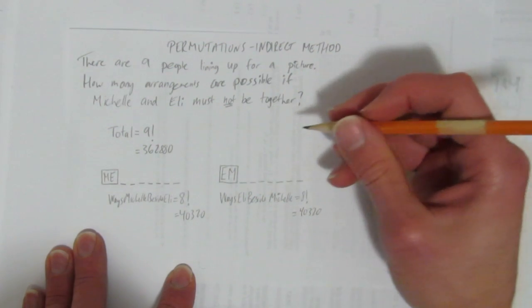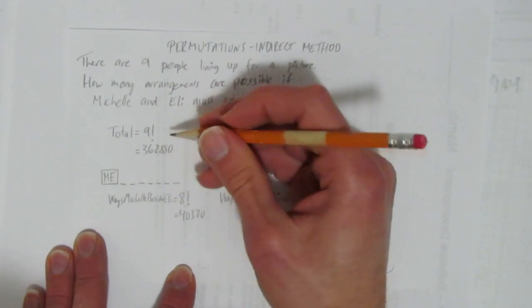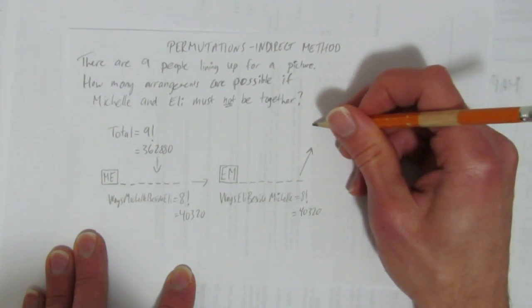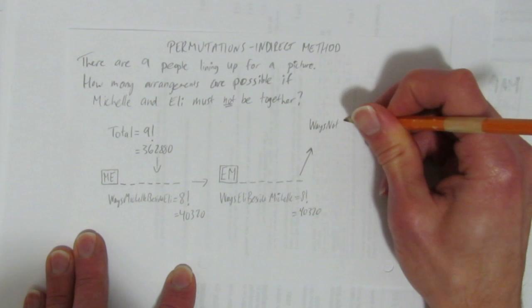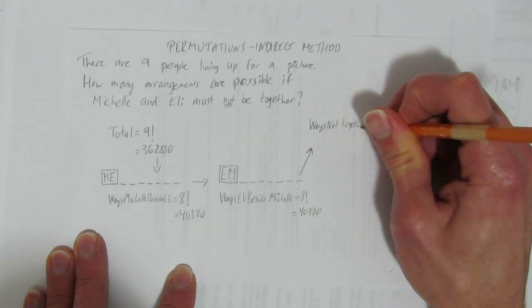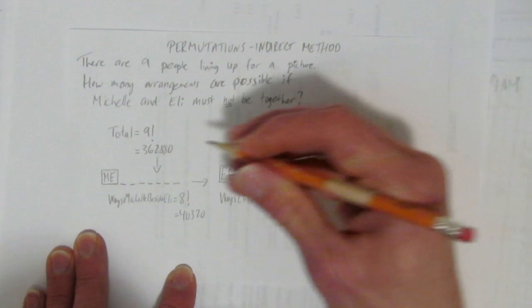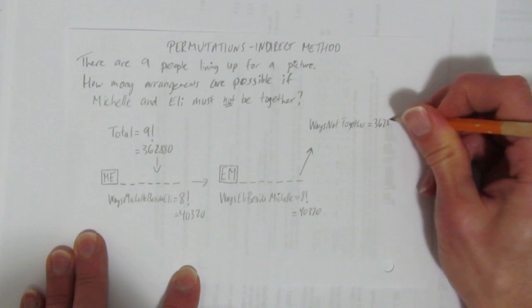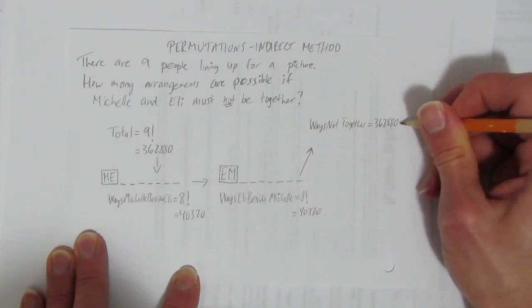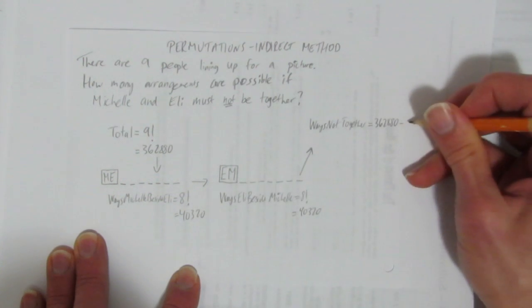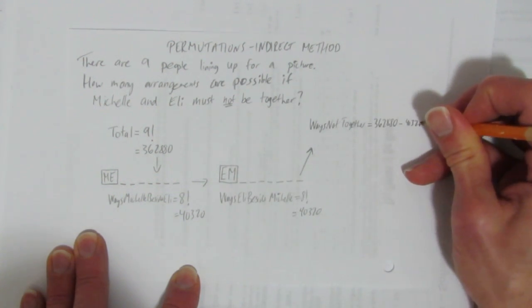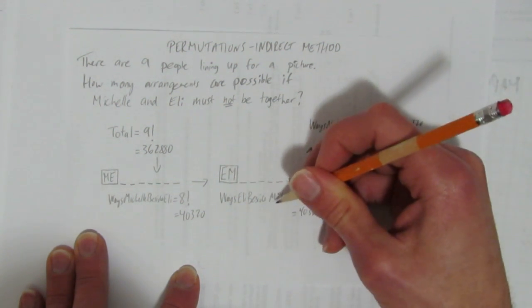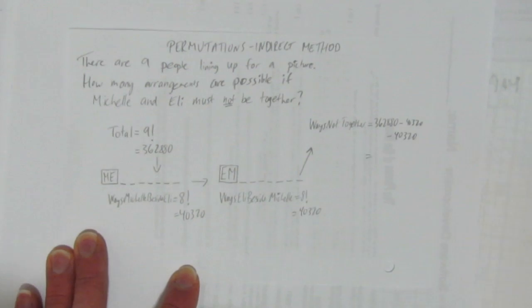Now brings me to our final answer. If you want to put little arrows of how we flowed, we went to here, and then to here, and now here's our final answer. It's going to be the ways that they're not together equals their total number of ways, nine factorial, which was 362,880, minus the 40,320 ways they're together when Michelle's first, and take away another 40,320 ways they're together when Eli's first.